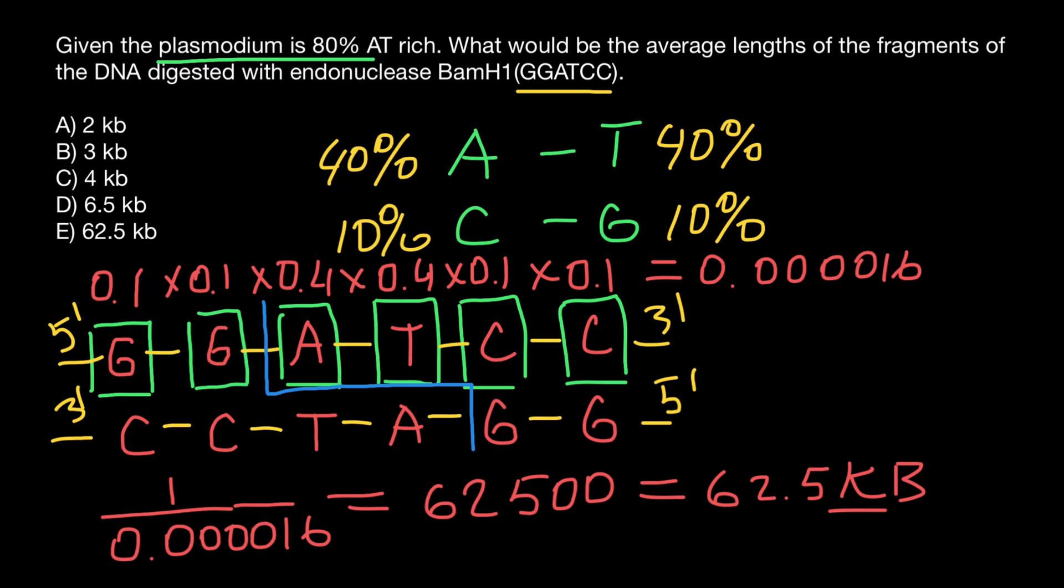Or we can say 62.5 kilobase. K stands for 1,000. According to our answer choices, this is answer E. This endonuclease with this recognition sequence is going to cut double-stranded DNA every 62,500 bases or every 62.5 kilobases.